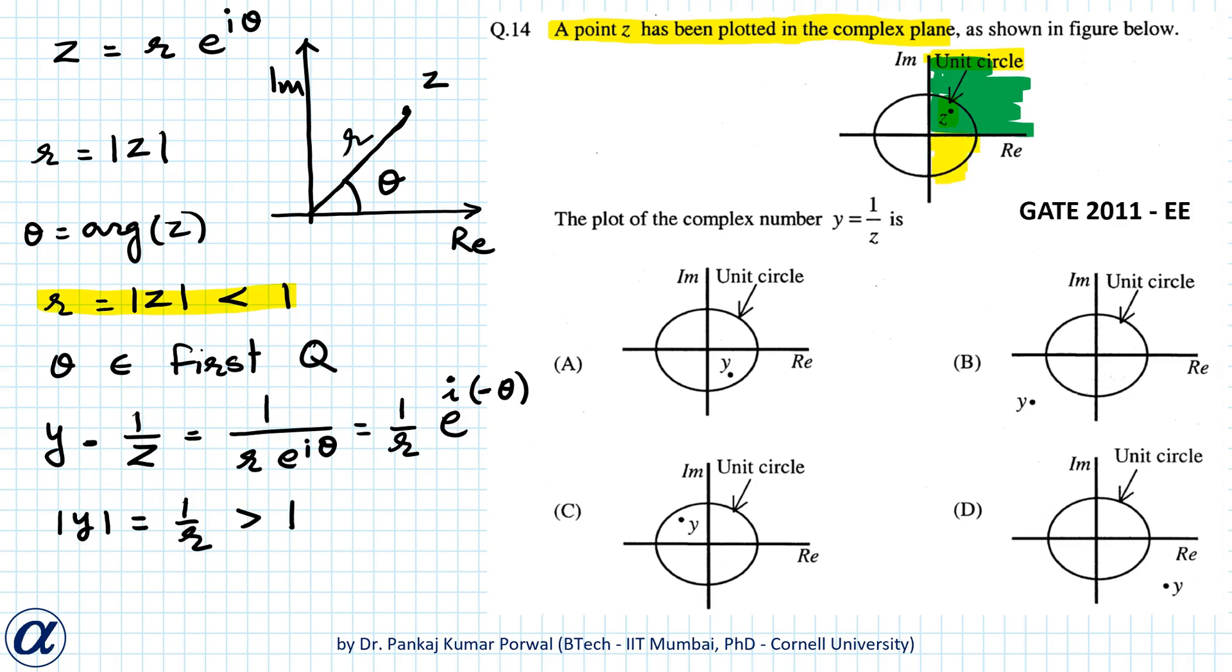And the argument of y will be minus theta. Because theta lies in the first quadrant, minus theta will lie in the fourth quadrant. So y will lie outside the unit circle and in the fourth quadrant. Therefore, our choice D is the correct answer.